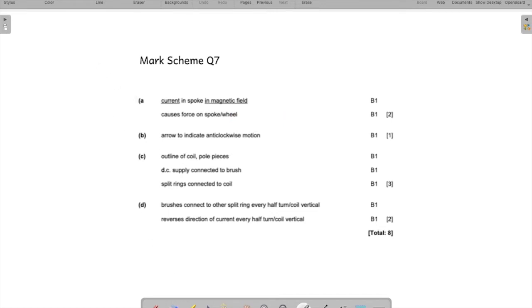So two valid points. Current in the magnetic field - first statement. Current carrying conductor in the magnetic field - first point. This causes force on the conductor. So two points, two marks for this question. One plus one - two.